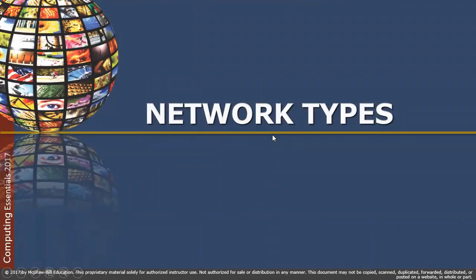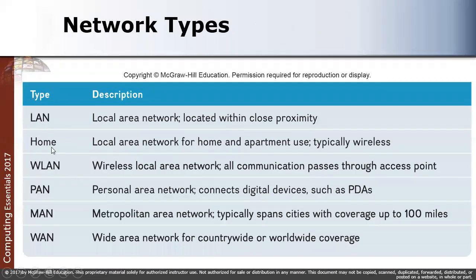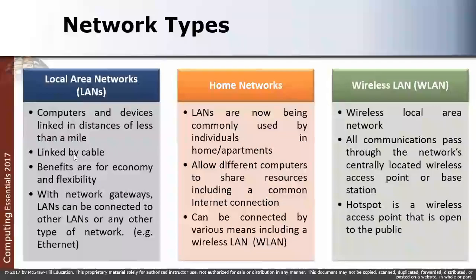There are several types of network: LAN, home network, WLAN, PAN, MAN, and WAN. The local area network, or LAN, connects computers and devices within a distance of less than a mile, linked by cable. LANs can be connected to each other using a network gateway such as the internet. In the lab, the blue cable you see plugging into the internet port is an example of a LAN cable.